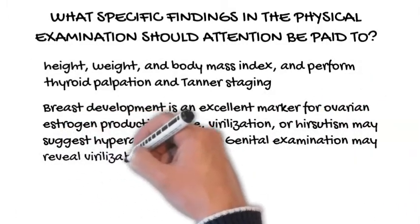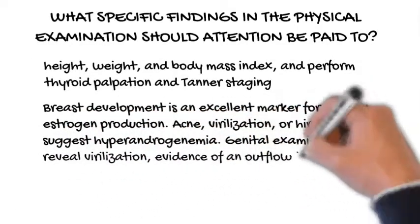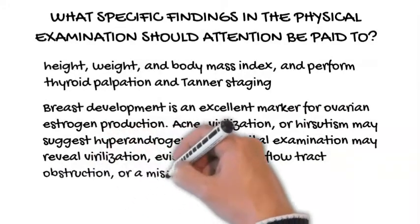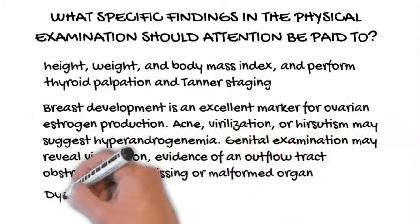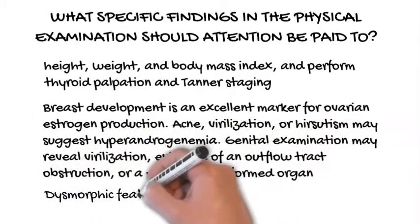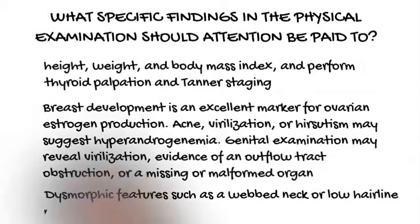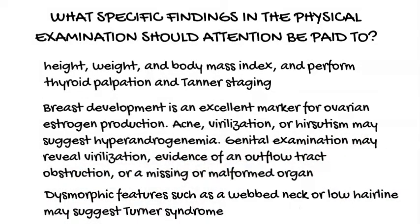Genital examination may reveal virilization, evidence of an outflow tract obstruction, or a missing or malformed organ. Dysmorphic features such as a webbed neck or low hairline may suggest Turner syndrome.